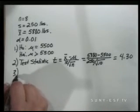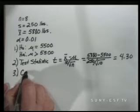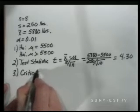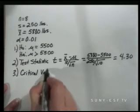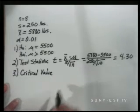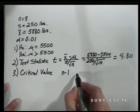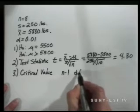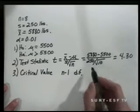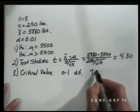The third step is to find the critical value. In order to do this, we need to first determine our degrees of freedom. Degrees of freedom are based on n minus 1, our sample size. So we have seven degrees of freedom.